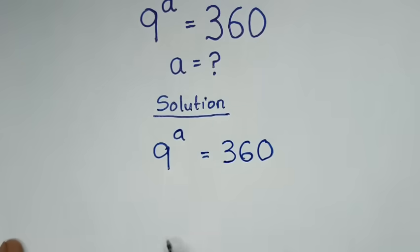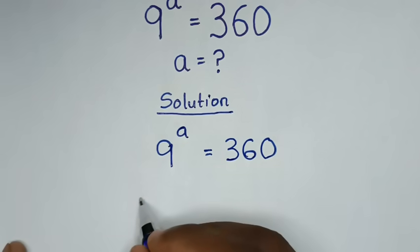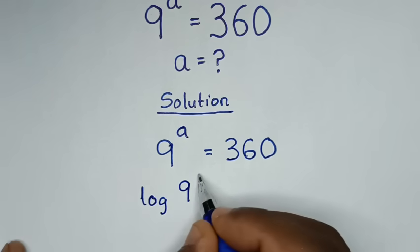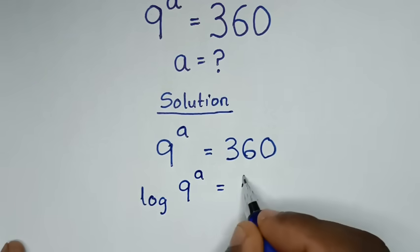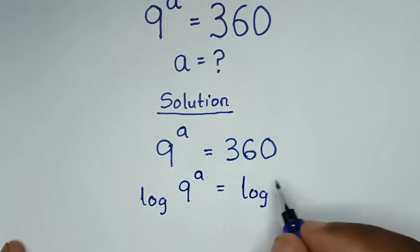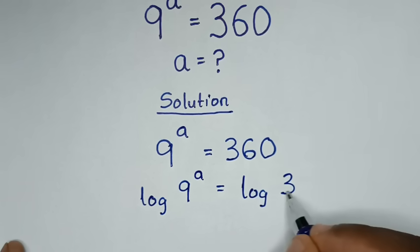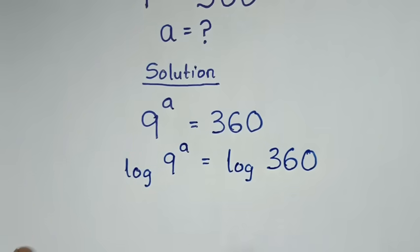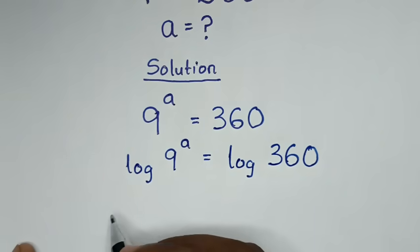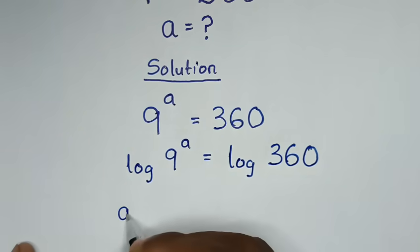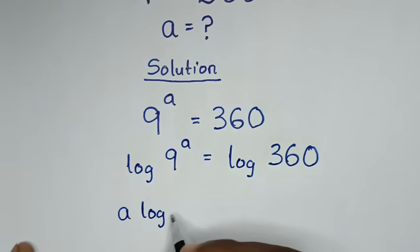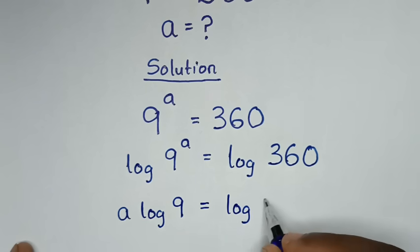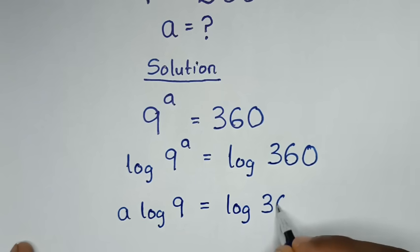In the first step, we'll apply log in both sides. So it will be log of 9 power a is equal to log of 360. Then in the next step, this power of a will move to the base, so it will be a log of 9 is equal to log of 360.